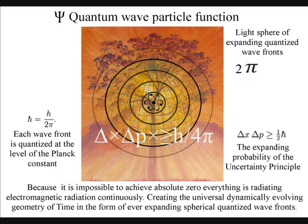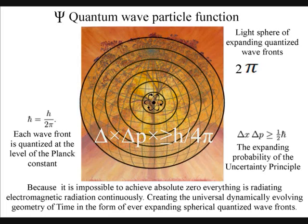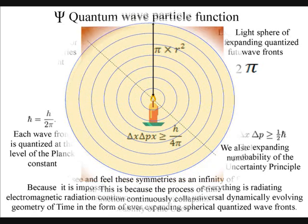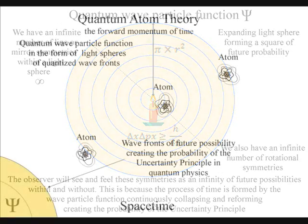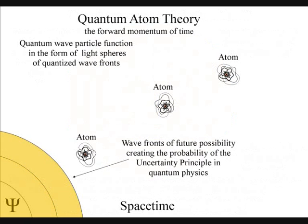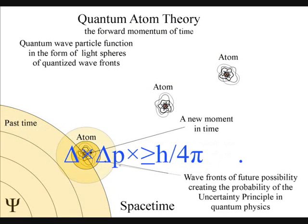In a new theory called quantum atom theory this underlying symmetry is the symmetry of light forming the curvature and geometry of space-time. In quantum atom theory it is the emission and absorption of light or electromagnetic radiation from one atom to another that forms the arrow of time continuously creating the broken symmetry of space-time.